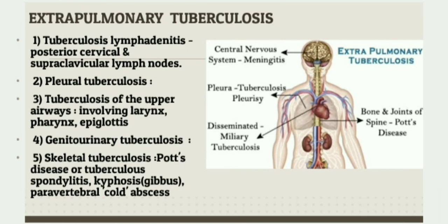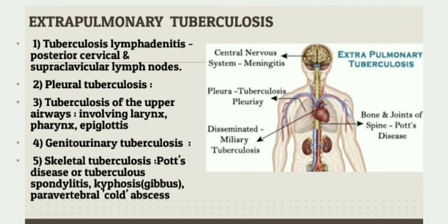TB of the upper airways affects the larynx, pharynx, and epiglottis. Genitourinary TB involves renal TB and genital TB. In females, the fallopian tube and endometrium are commonly involved, causing infertility. In males, the epididymis is the most common site affected by genital TB. In skeletal TB, weight-bearing joints such as the hip, knee, and spine are affected. Pott's disease, or tubercular spondylitis, is the most common skeletal TB, affecting the spine. In severe or advanced disease, collapse of vertebral bodies results in kyphosis, and a paravertebral cold abscess may also form.